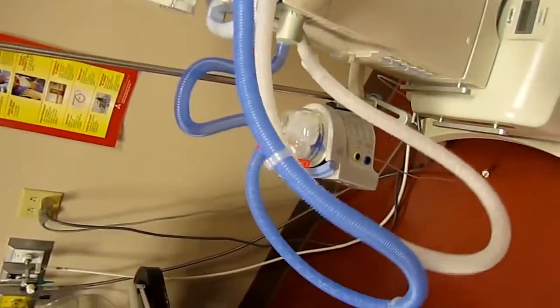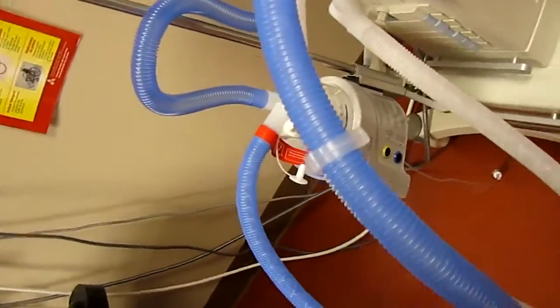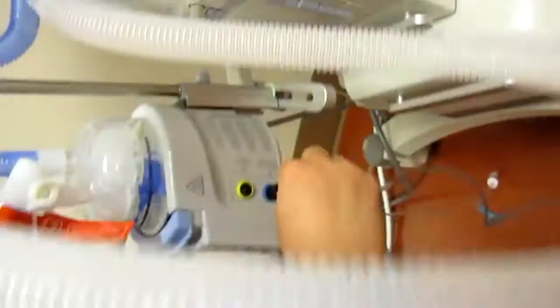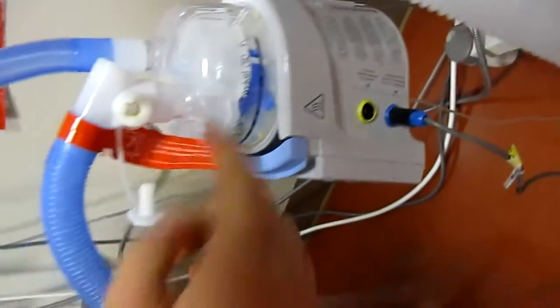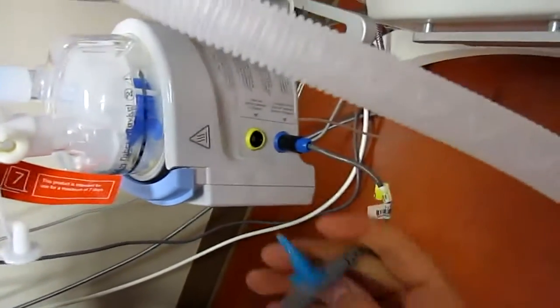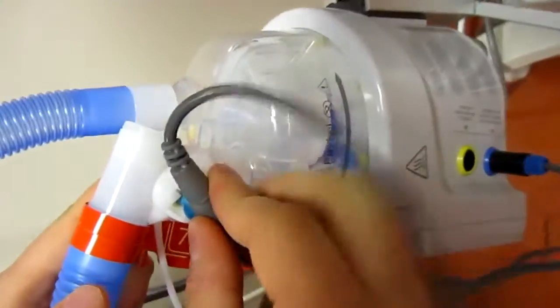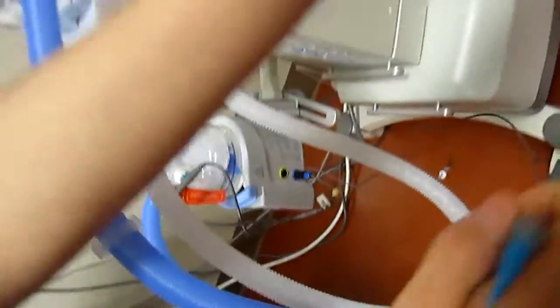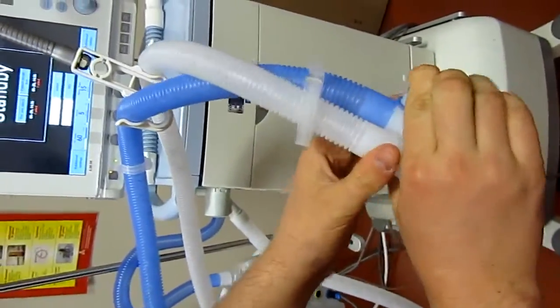Okay, the next thing that gets set up is the temperature probes. They're color coordinated. I always remember blue goes with blue. So you set the blue one up to the inspiratory limb. There's a short end and a long end. So the short one gets set right here, and the long one gets set at the end of the inspiratory line. Right there.